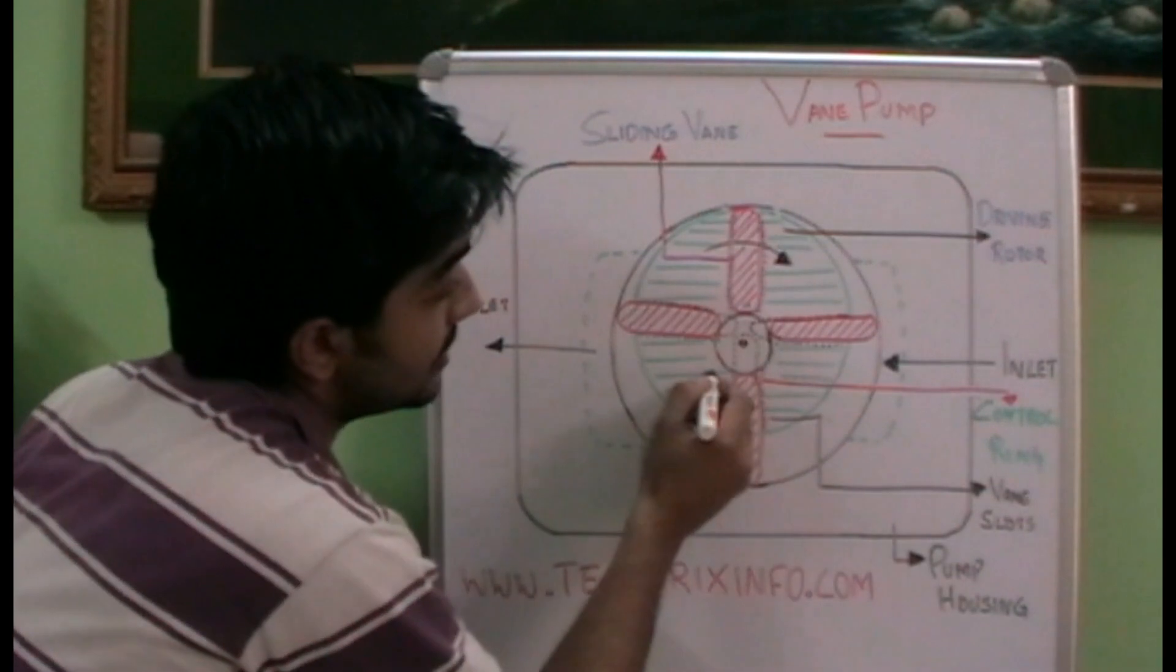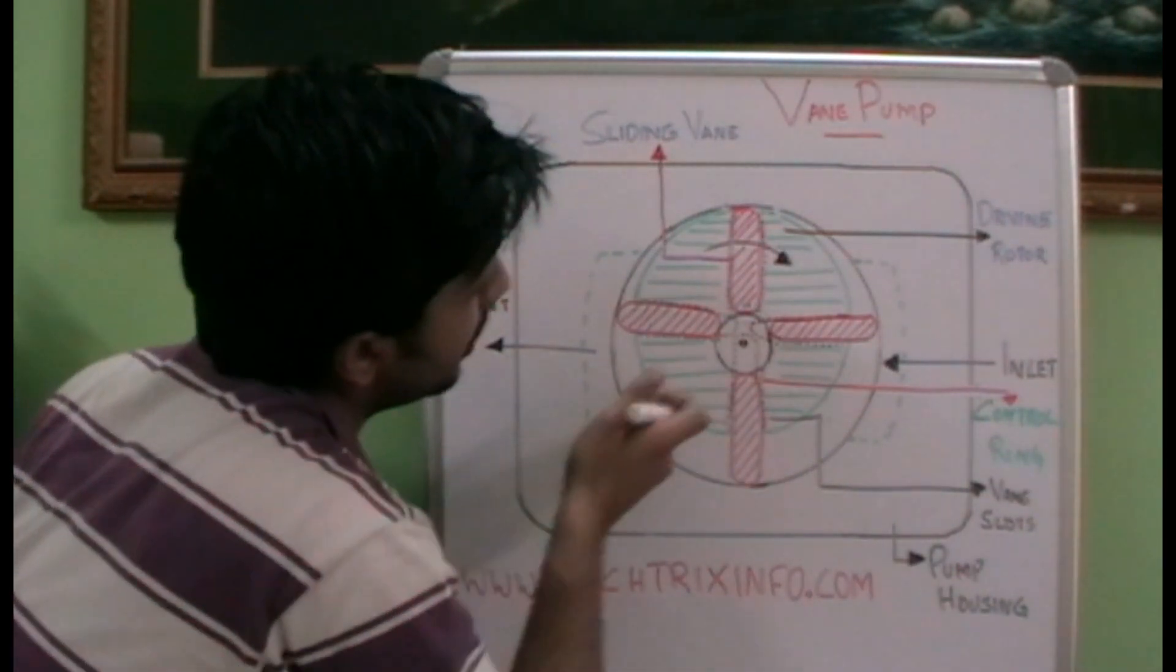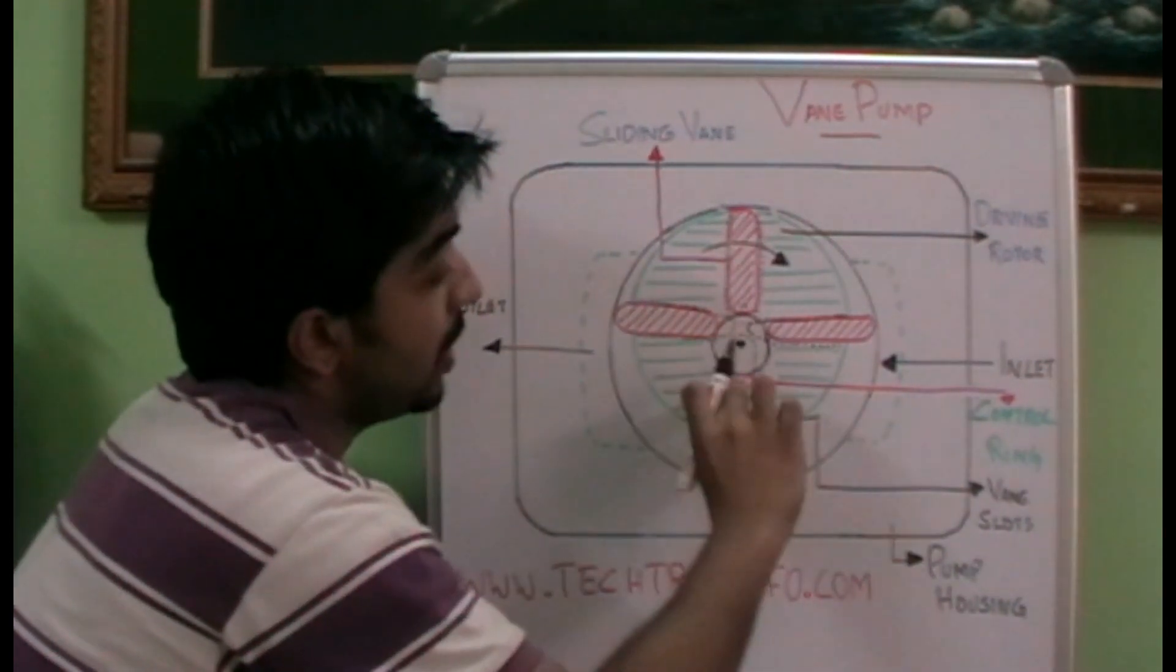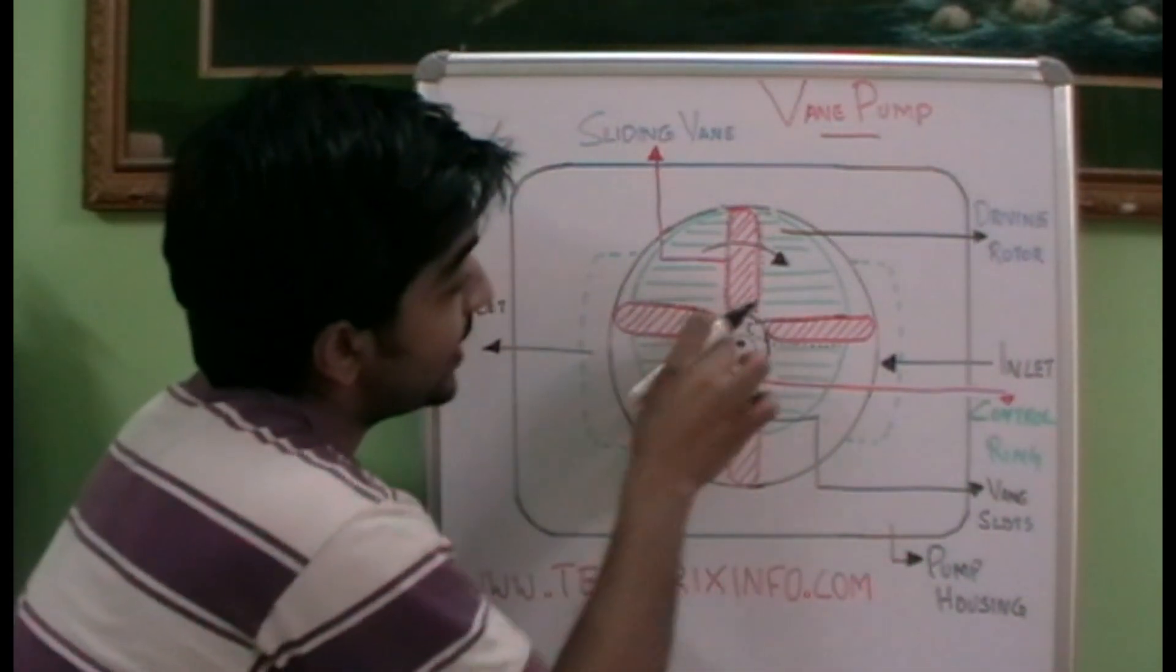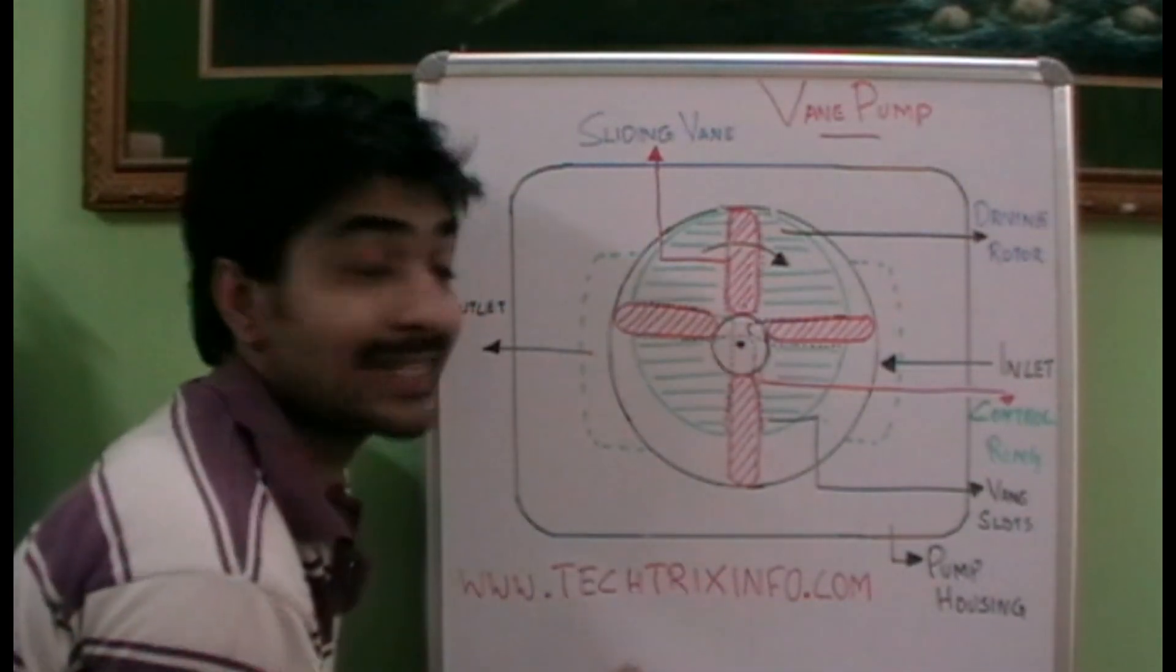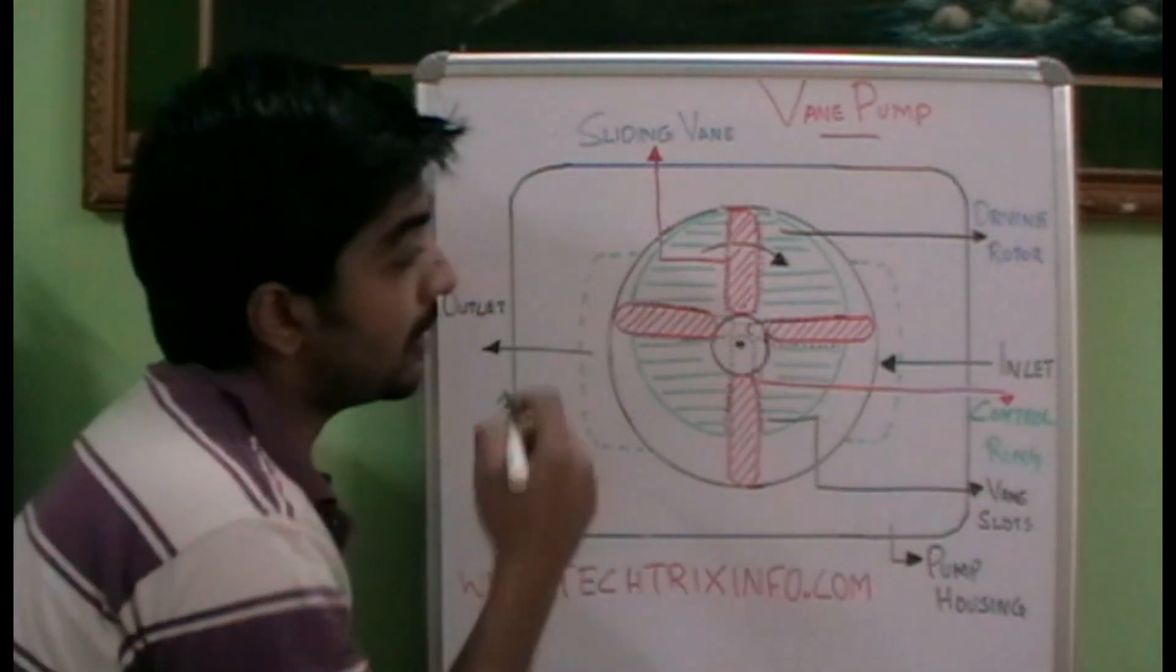When it further rotates you can see these slots will have more area produced over here which will allow these vanes to move inside, and it will be controlled with the help of this control ring which will be always in the center of this vane pump.